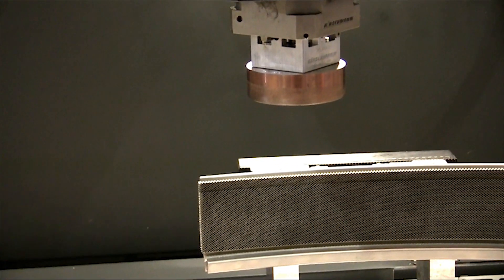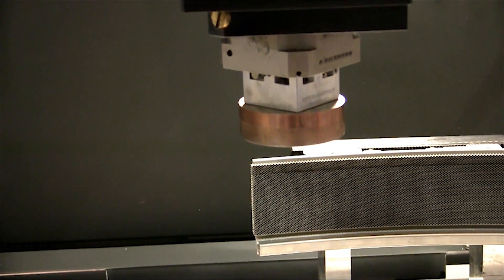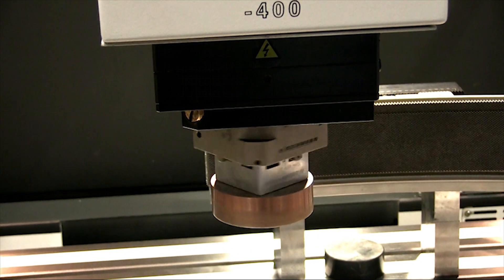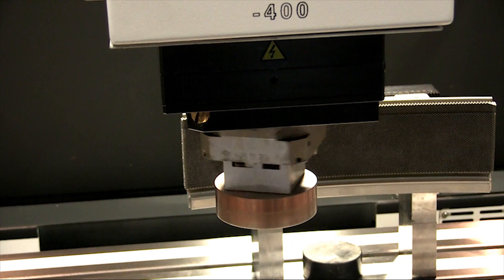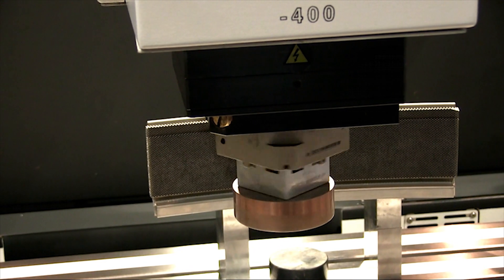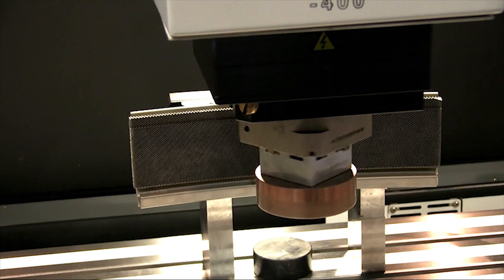What we're showing here is a unique application, a section of honeycomb seal. The honeycomb seal needs to be faced, it needs precision, and it needs to be cleaned up and burr-free. We're coming in with an electrode and, for lack of a better term, EDM grinding.